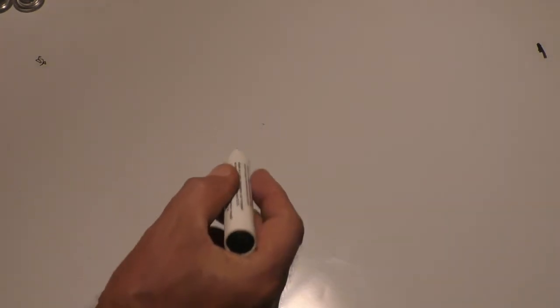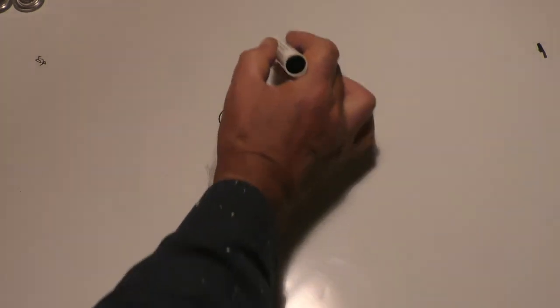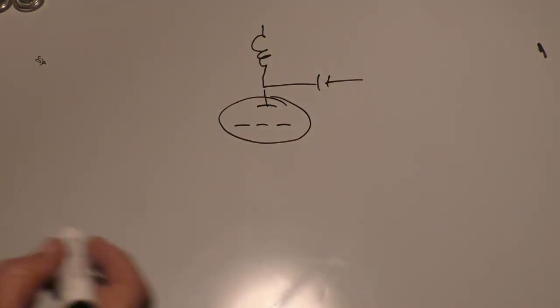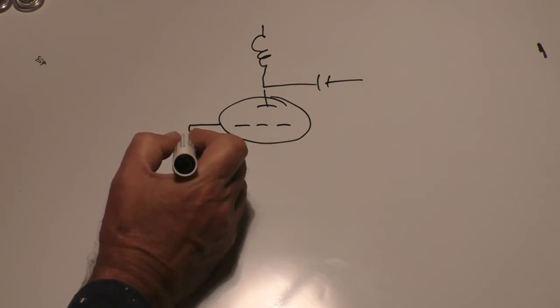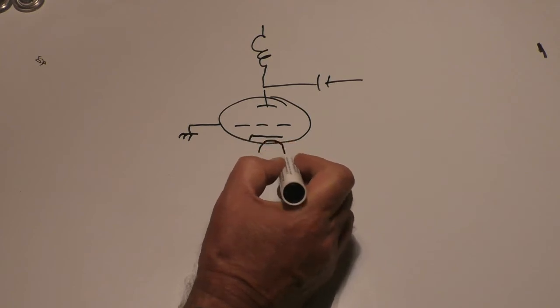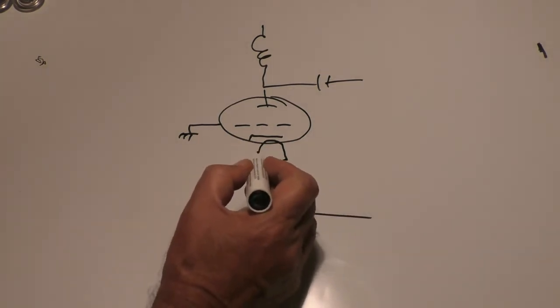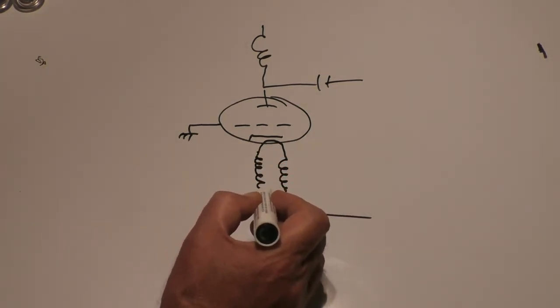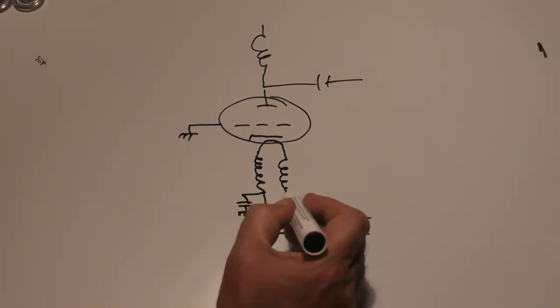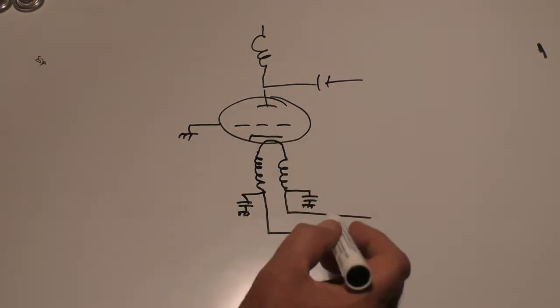It started off as a box standard GS35B grounded grid amp so the grid was grounded, got the cathode there, got the heater with a bifilar choke however that's pronounced. I'm leaning around the tripod here so it might look a little bit wobbly almost as wobbly as the output waveform. That goes off to the heater transformer.